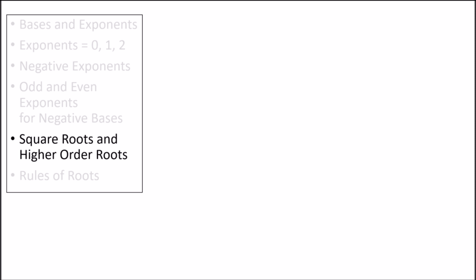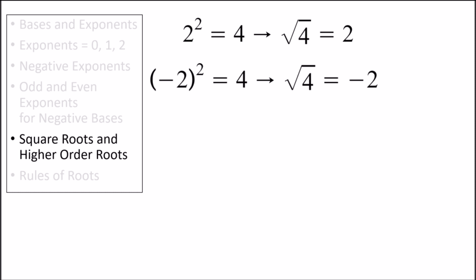Next we have square roots and higher order roots. Square roots are the opposite of squaring a number. For example, the square of the number 2 is 4, and the square root of the number 4 is 2. Square roots of positive numbers will always have 2 values. For example, while the square root of 4 can be 2 since 2 times 2 equals 4, the square root of 4 can also be negative 2 since negative 2 times negative 2 is also 4. A very common mistake on test day is to forget that square roots of positive numbers can be either negative or positive, so let's not forget this.